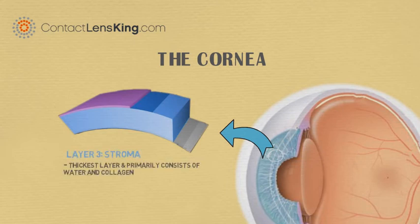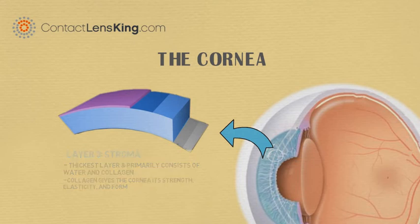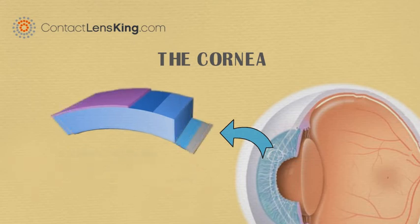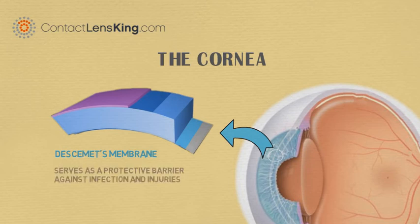Behind Bowman's layer is the stroma, which is the thickest layer of the cornea and primarily consists of water and collagen. The collagen gives the cornea its strength, elasticity, and form. Behind the stroma is Descemet's membrane, which serves as a protective barrier against infection and injuries.